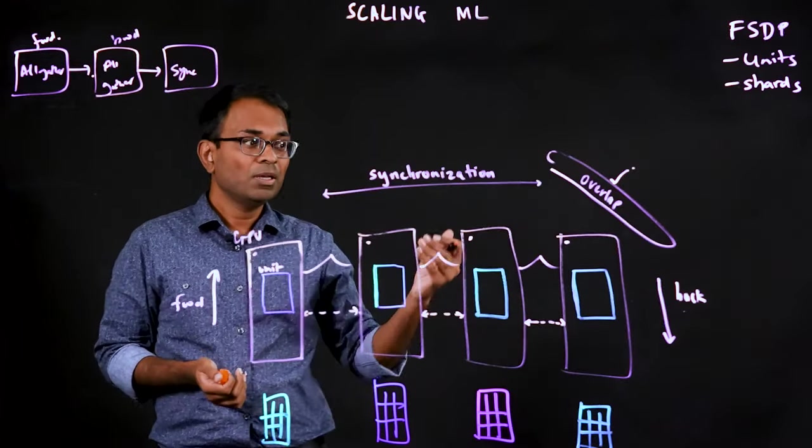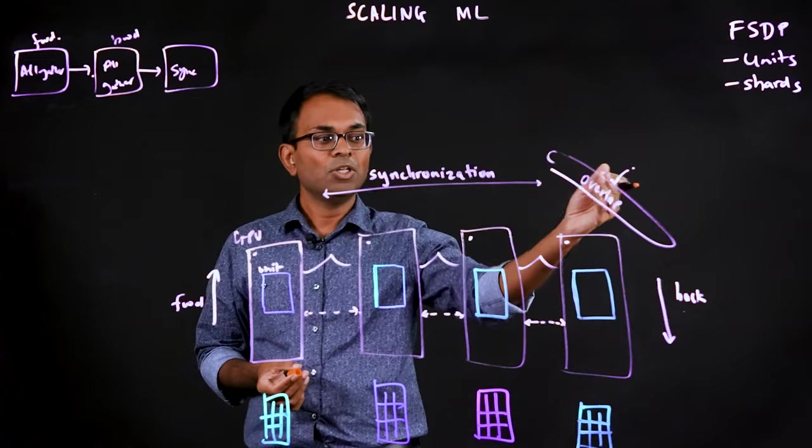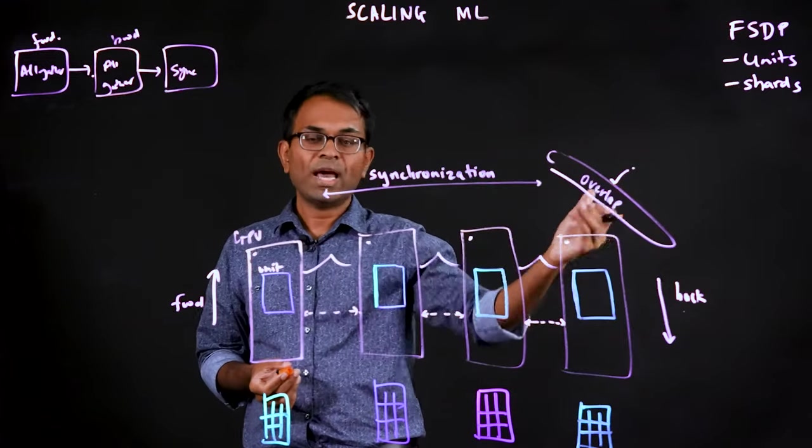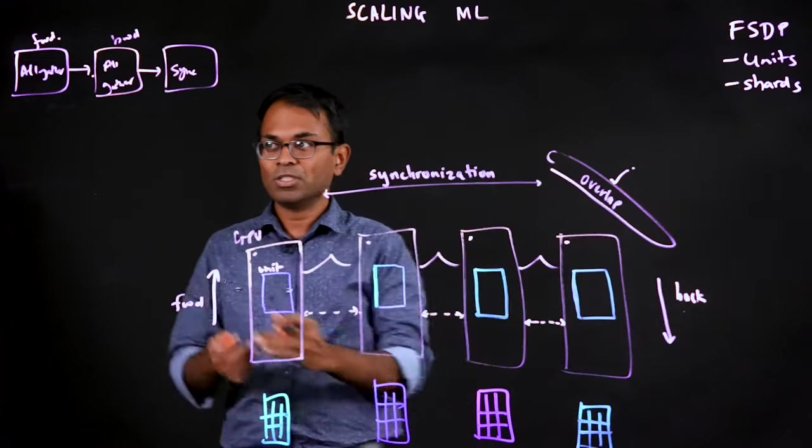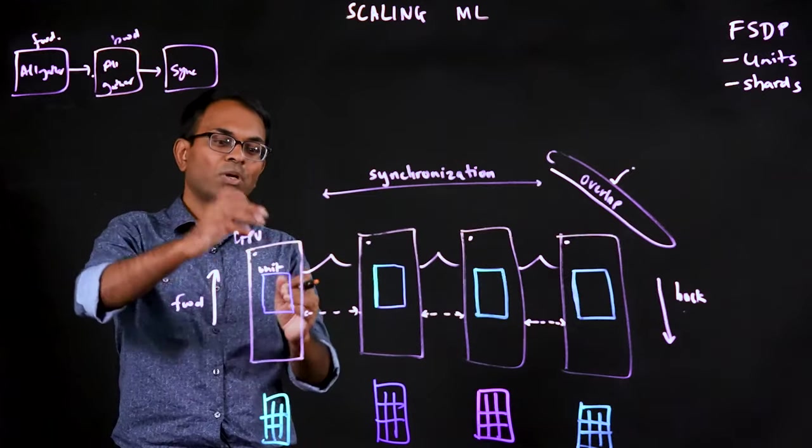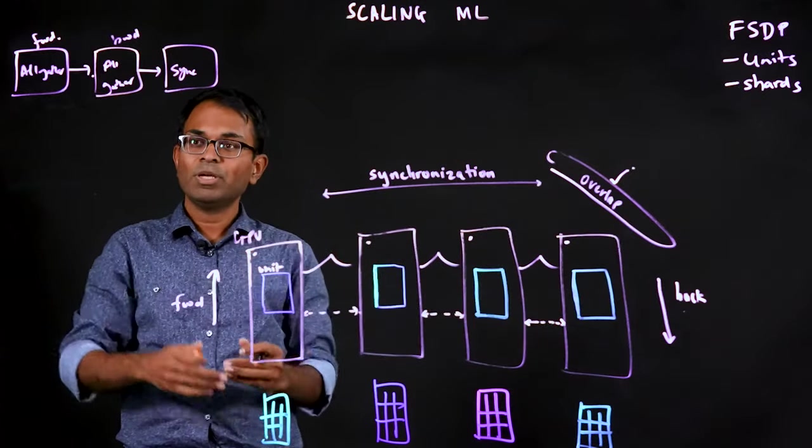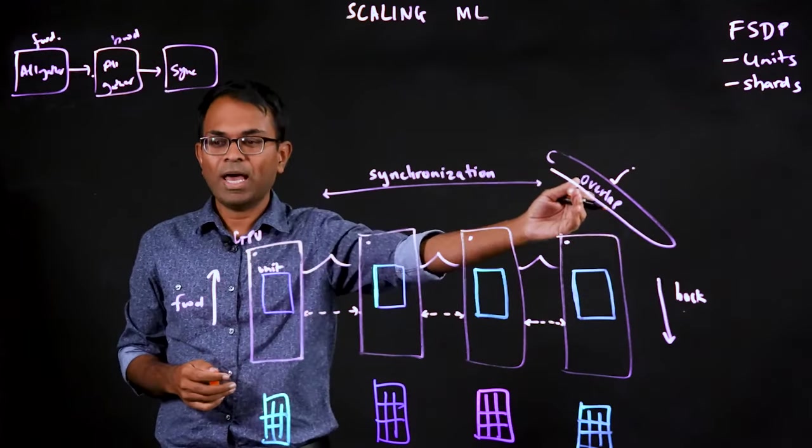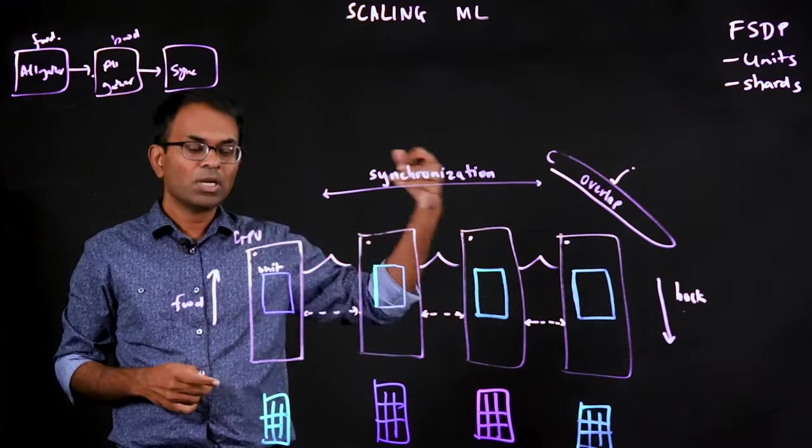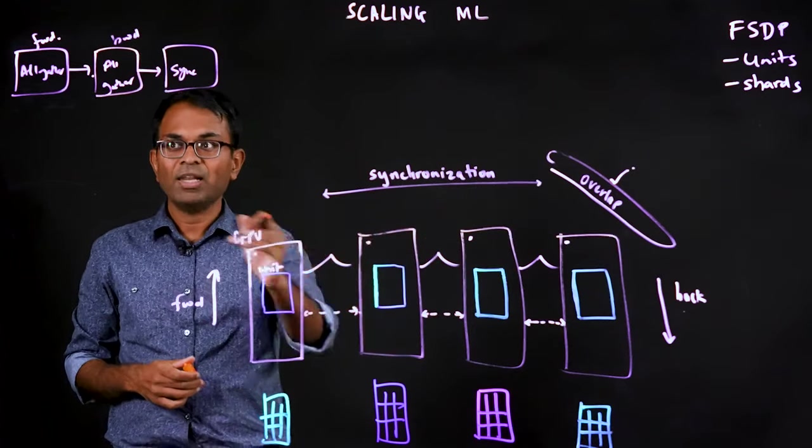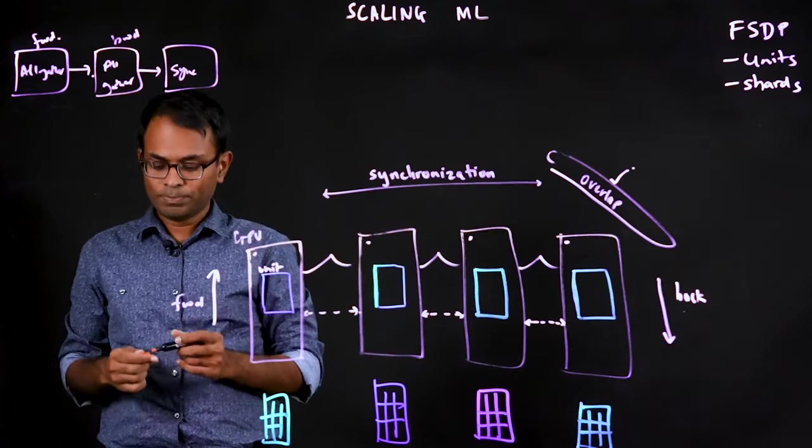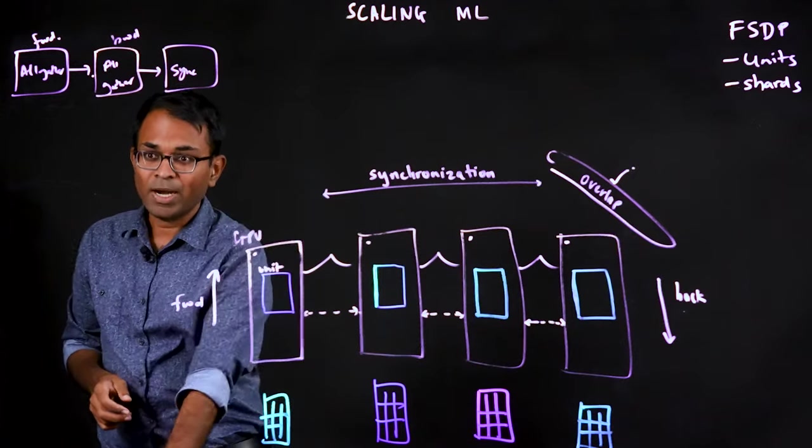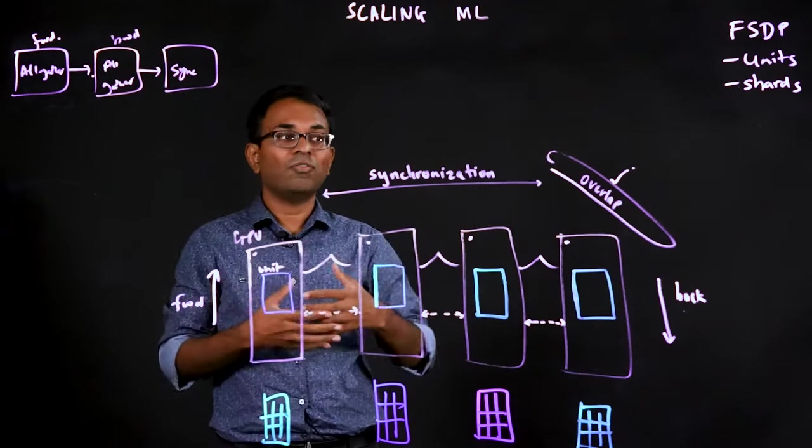And in FSDP, very much like DDP, you are going to utilize overlap in a significant way. Because imagine in DDP, there was only one single synchronization step. In FSDP, I have more opportunities for doing overlap and keeping those GPUs continuously busy while you are doing your computation. And that is how you achieve scale of these models.